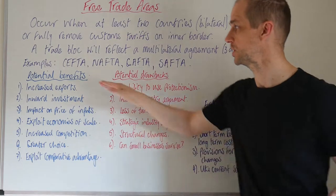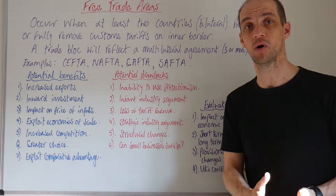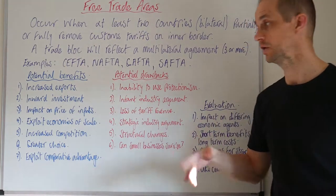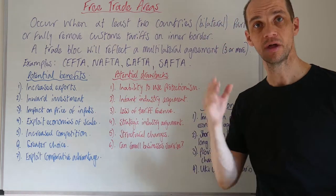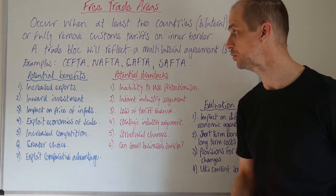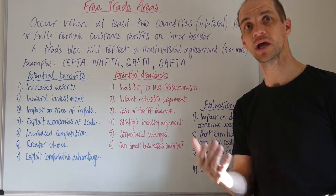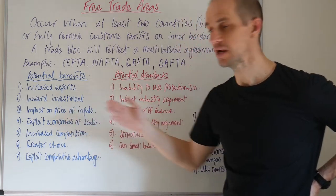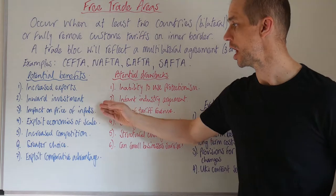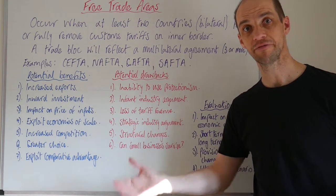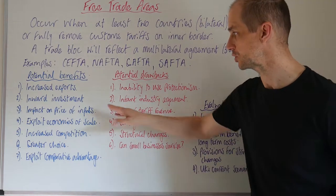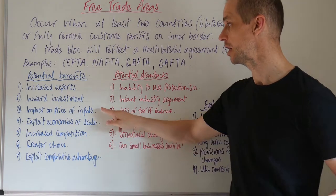So the potential benefits — first up, increased exports. Increased exports would therefore mean aggregate demand increases. That would then mean you'd be able to use an aggregate demand and aggregate supply diagram in your essay, together with being able to reflect also on inward investment. Both of these areas would hopefully help to boost employment and boost economic output. Now there may also be an impact on the price of inputs, because you've now removed those tariff barriers and as such you might be able to get hold of inputs for your manufacturers at a much cheaper level, which will make the final product cheaper and more competitive.